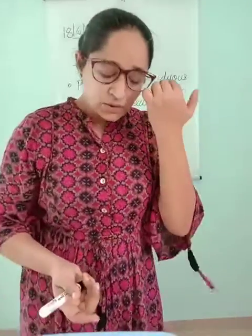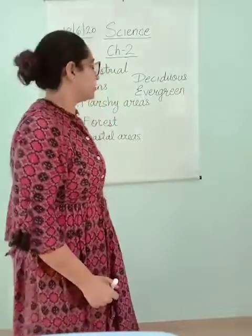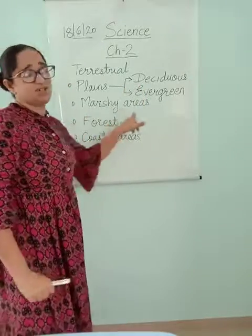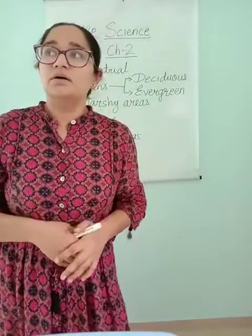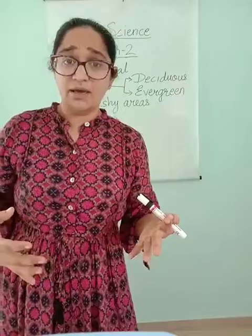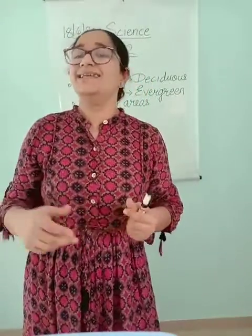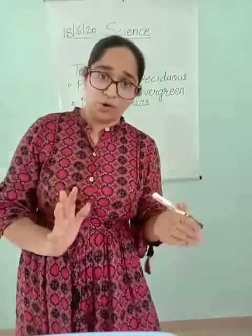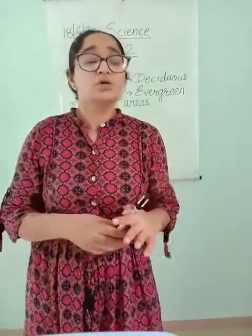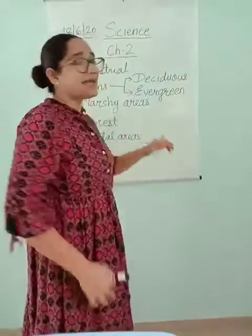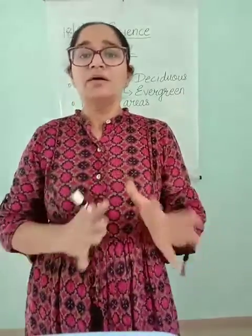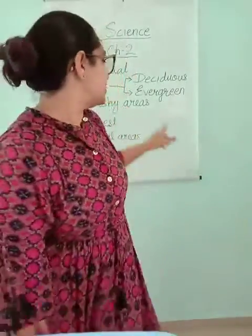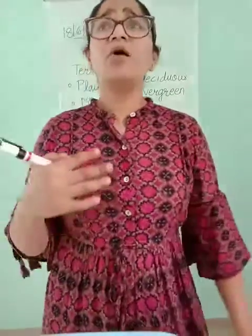So those are deciduous and evergreen trees. These trees are in the plain regions. Now let's talk about the marshy areas. Marshy areas are places where plants are growing in puddles — soil with a lot of water. Those areas where it is marshy, having a lot of water with soil. Those trees are of marshy areas. They are also called as mangroves.